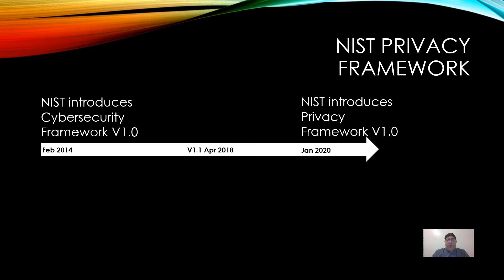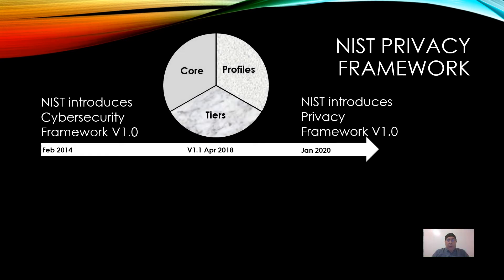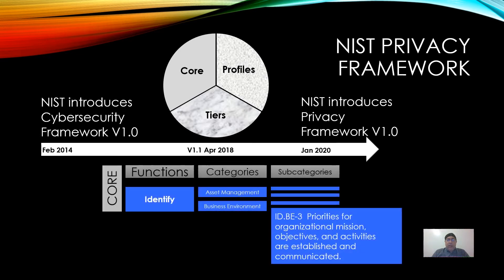The frameworks are divided into three components: cores, profiles, and tiers. Most people associate the frameworks with the core, and I'm also going to be talking about profiles today. The core is divided into functions, categories, and subcategories. So here we have the identify function, and under it are the categories of asset management and business environment, with subcategories within each category. For instance, this one is: priorities for organizational mission, objectives, and activities are established and communicated.